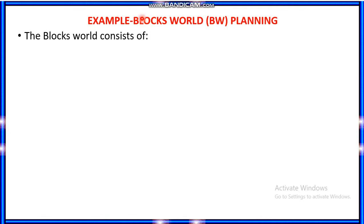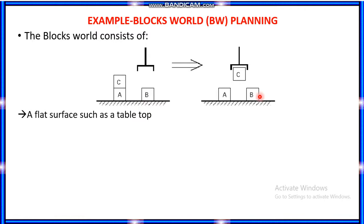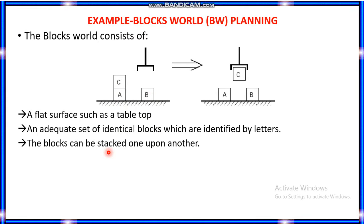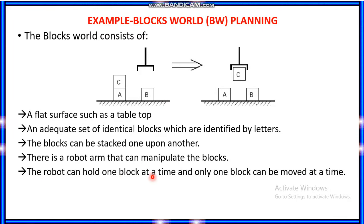We will take the example of the blocks world problem. The blocks world consists of a flat surface such as a table top and an adequate set of identical blocks identified by letters like A, C, B, and so on. The blocks can be stacked one upon another — A is on C, for example — and there is a robot arm that can manipulate the blocks. The robot can hold one block at a time, and only one block can be moved at a time.